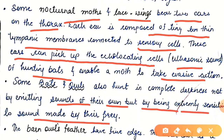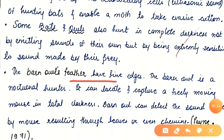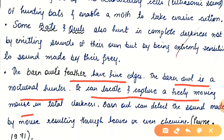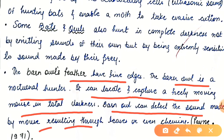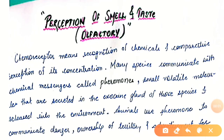Some bats and owls also hunt in complete darkness not by emitting sounds of their own, but by being extremely sensitive to sounds made by their prey. Barn owl feathers have tiny edges. The barn owl is a nocturnal hunter — it can locate and capture a freely moving mouse in total darkness. It can detect the sound made by a mouse rustling through leaves or even chewing — Payne, 1971.